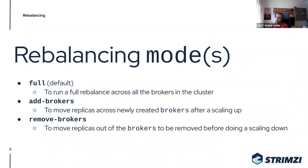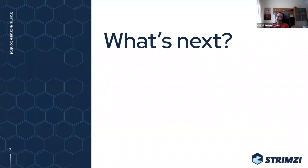There are different rebalancing modes: 'full' mode rebalances across all brokers in the cluster; 'add brokers' mode is used when adding new brokers, moving some partitions from existing brokers to the new ones; 'remove brokers' mode is used before removing brokers, to move partition replicas out so you can safely remove them without under-replicated partitions. You specify the mode and broker IDs in the KafkaRebalance custom resource.